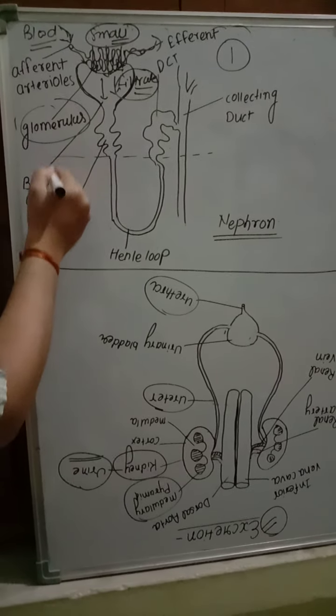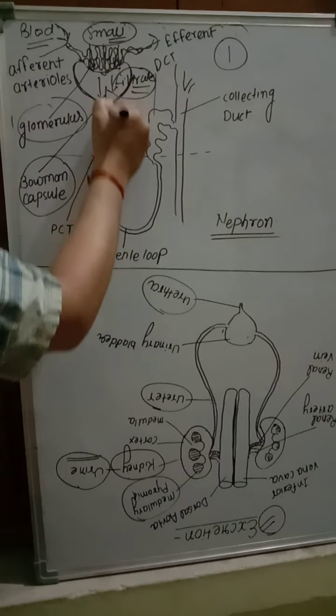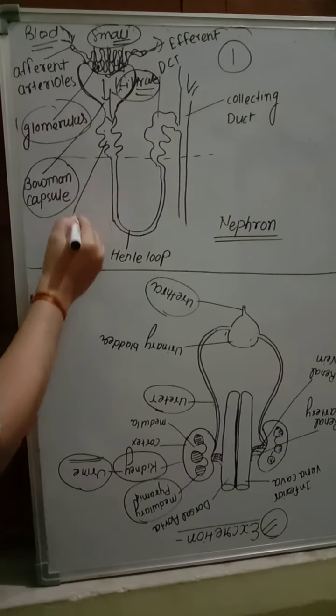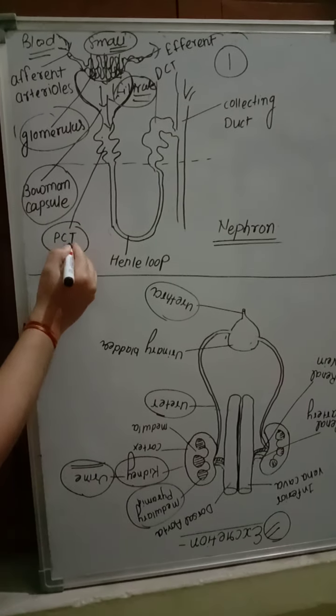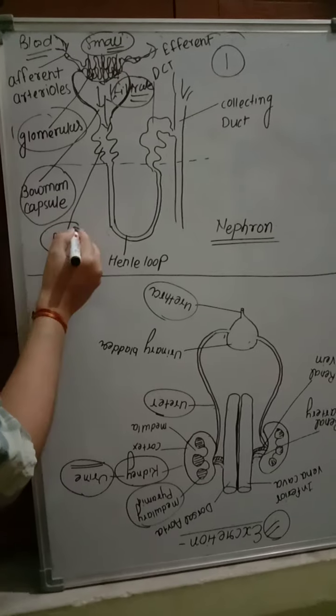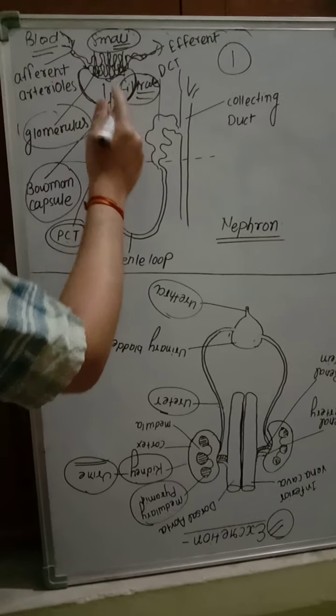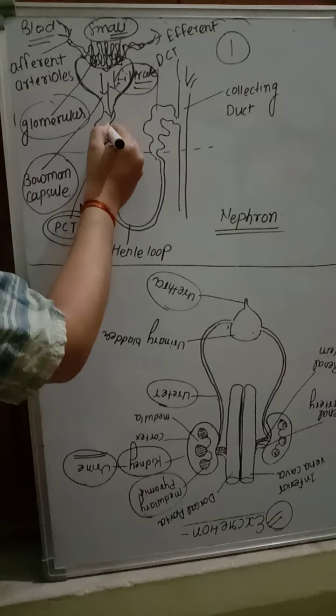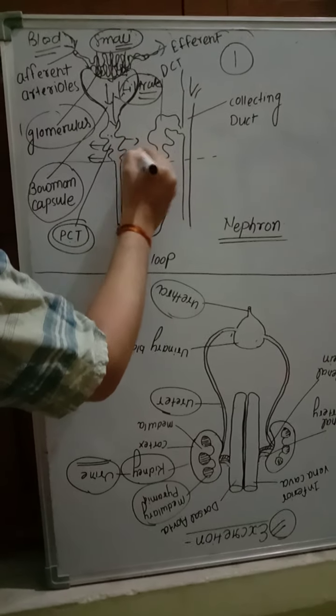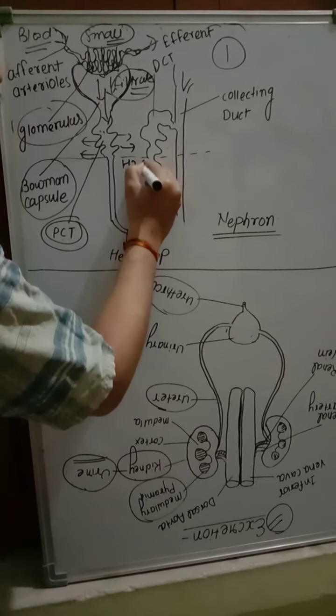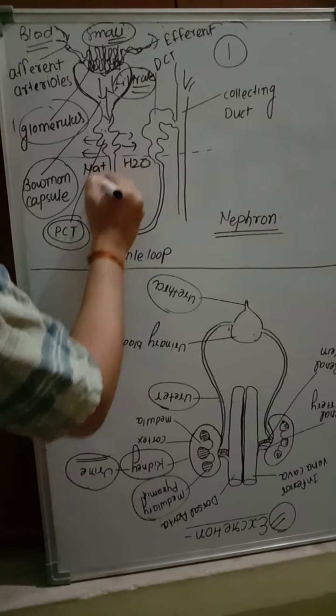That is called glomerular filtration, also called blood filtration. That is the first step of urine formation. In blood filtration, filtration of the blood takes place through the glomerulus and nitrogenous waste and other electrolytes are filtered through the blood and reach to the PCT part, proximal convoluted tubule. This PCT part contains mostly reabsorption.